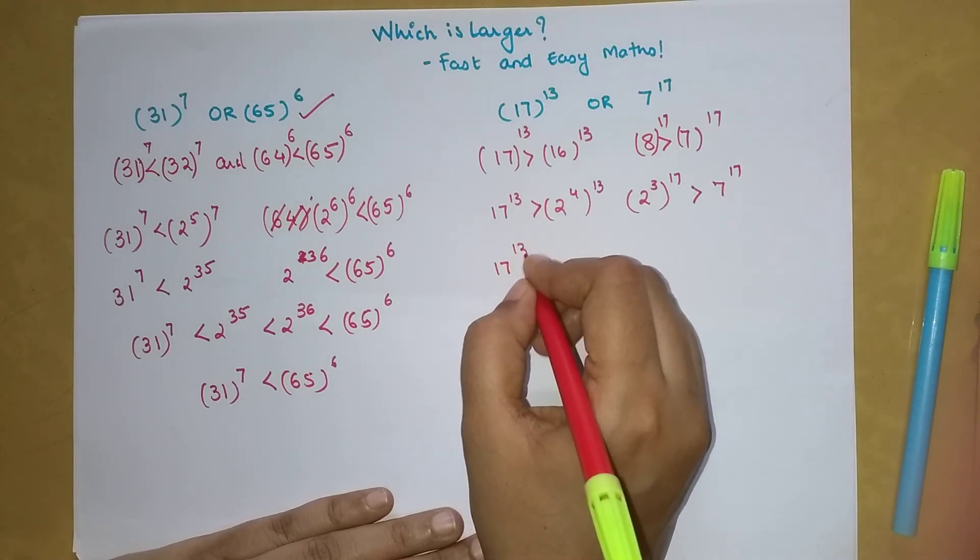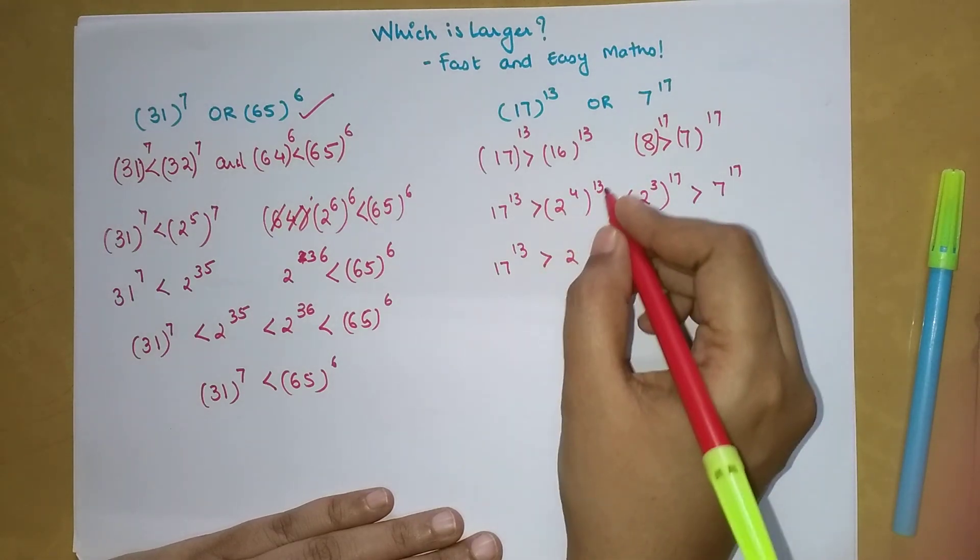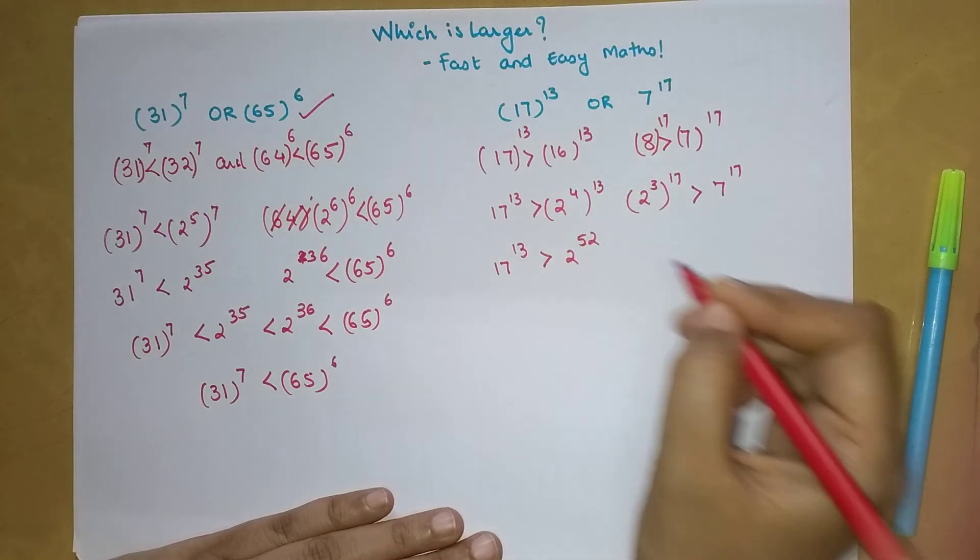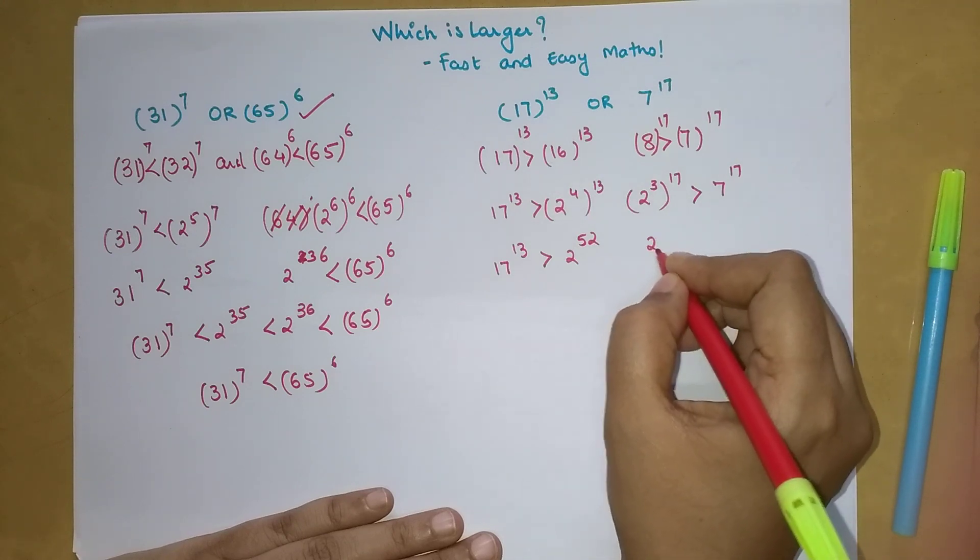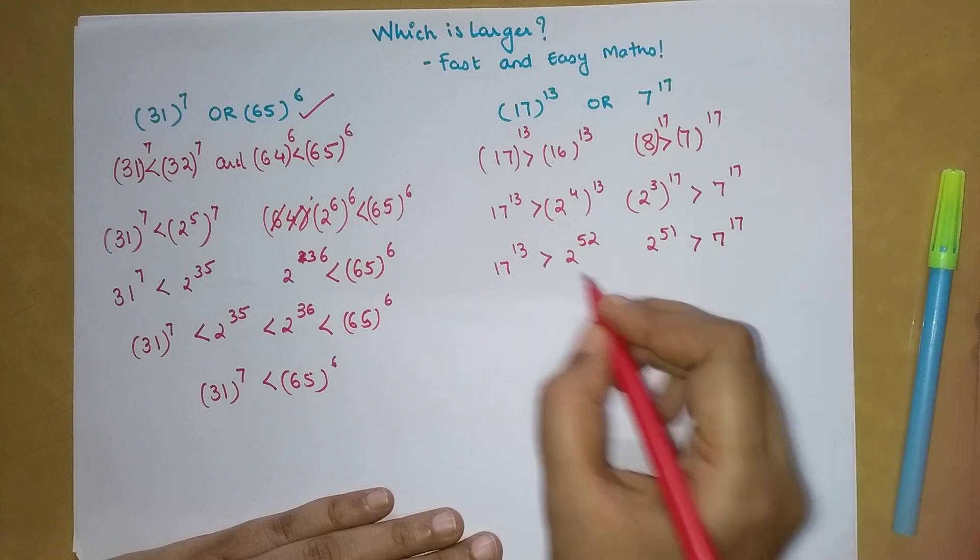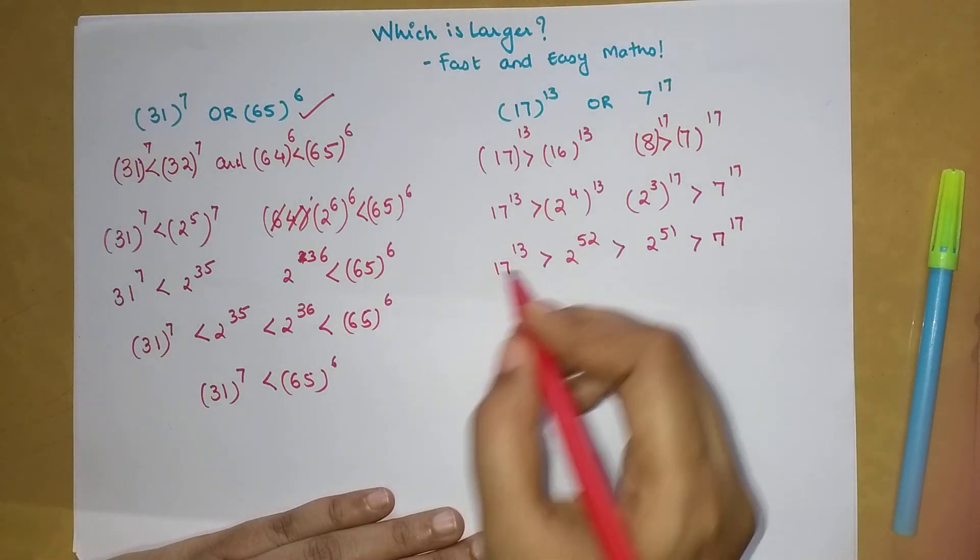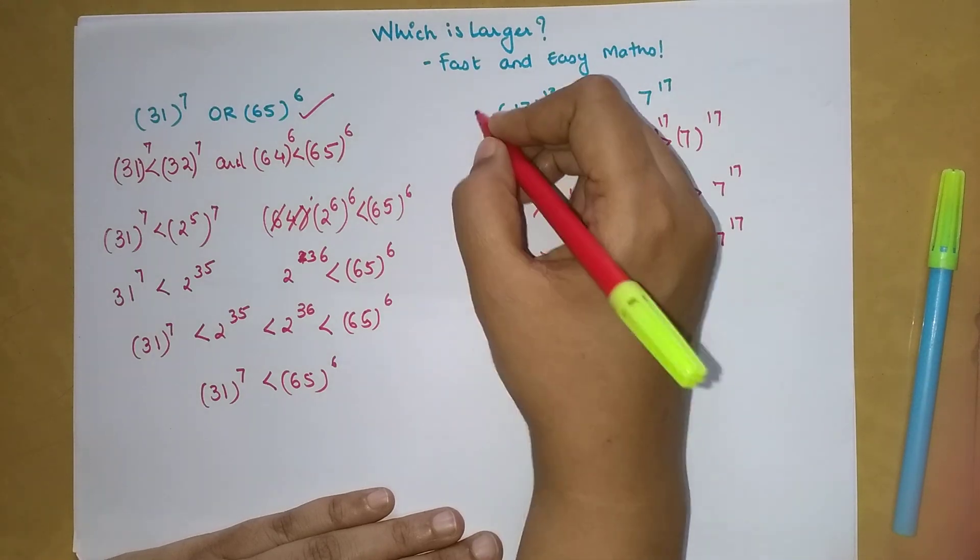We have 17 raised to 13 greater than 2 raised to 4 into 13, which will get you 52, and this is 2 raised to 51, and this is 7 raised to 17. Out of the two, I know that 2 raised to 52 is greater. So from here I can say that 17 raised to 13 is greater than 7 raised to 17.